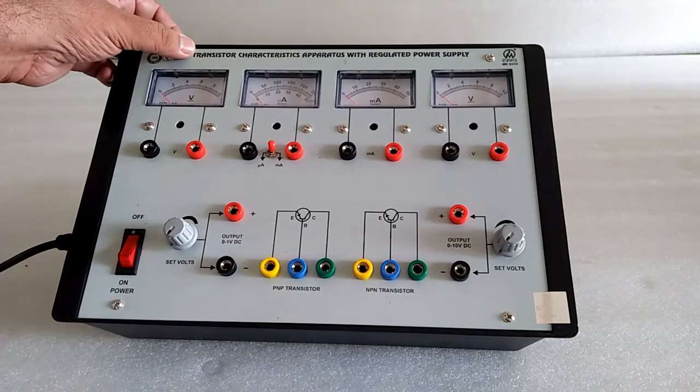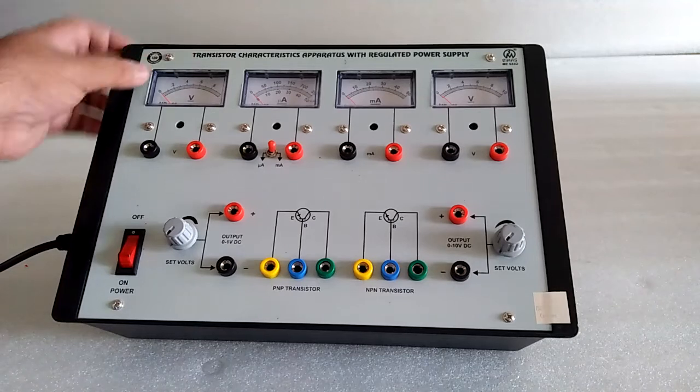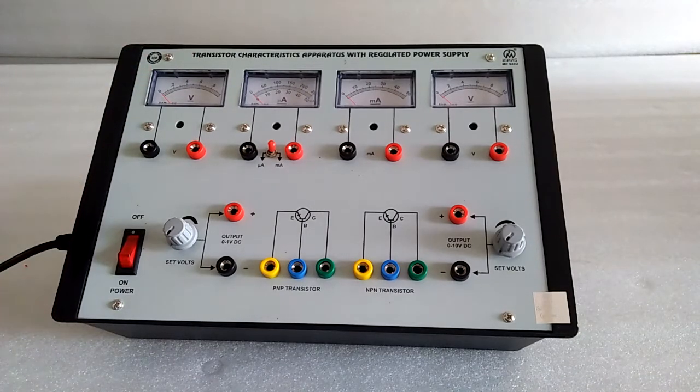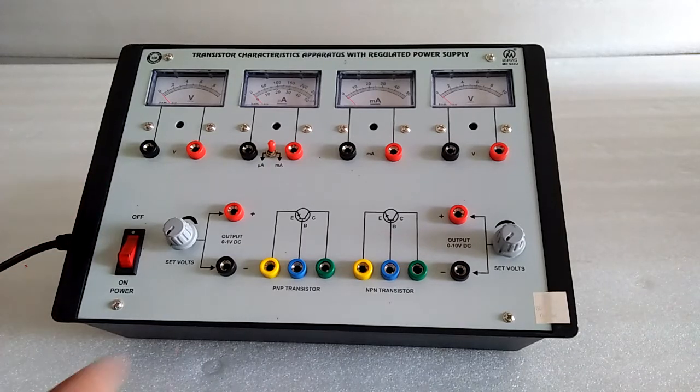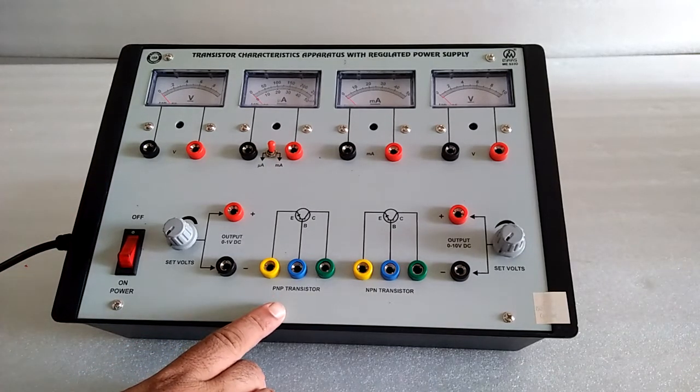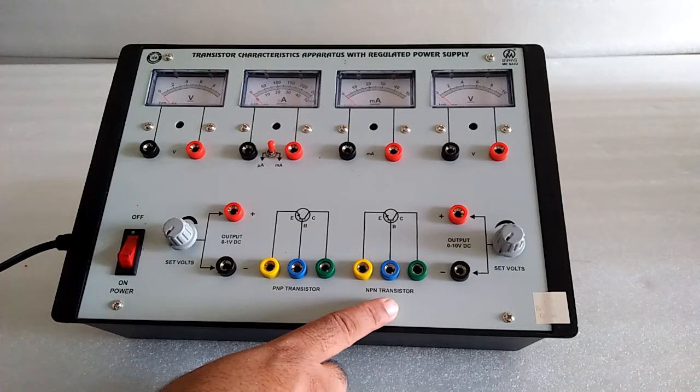Here is the transistor characteristics apparatus with regulated power supply. The aim of this kit is to make the characteristics of the transistor. Here we have PNP transistor and NPN transistor.